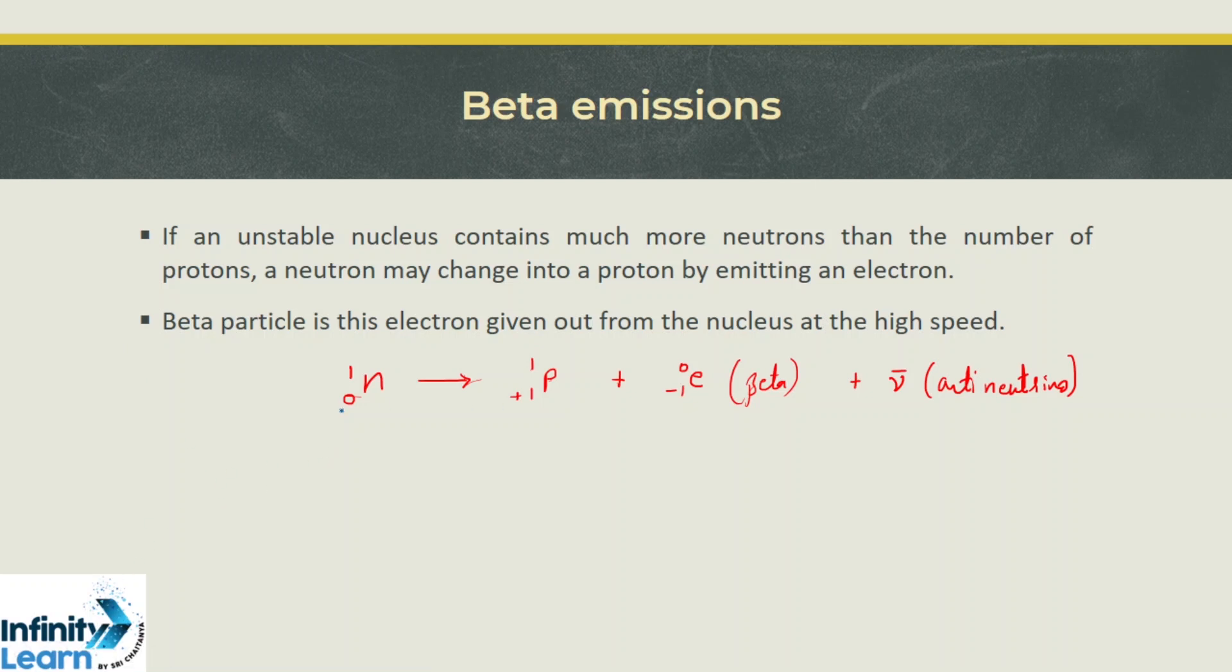The number of nucleons remains the same, but atomic number Z increases by one because the proton count increases. If we have a parent nuclei with atomic number Z and mass number A, after beta emission it will have atomic number Z+1, but the number of nucleons remains the same because the neutron is converted into a proton.